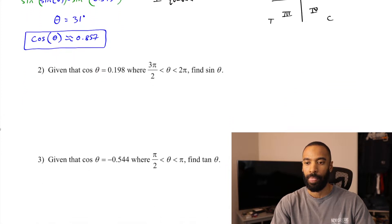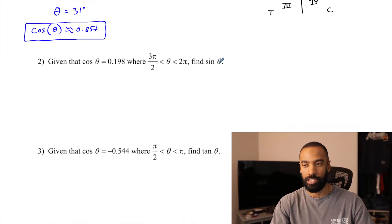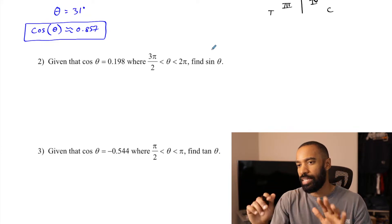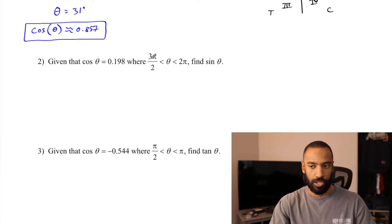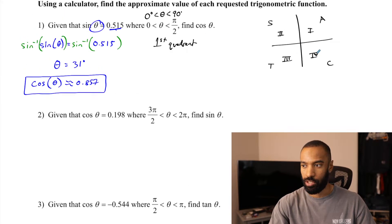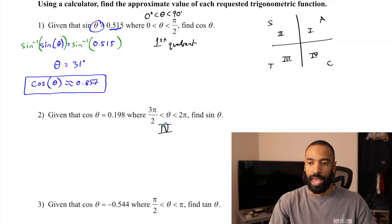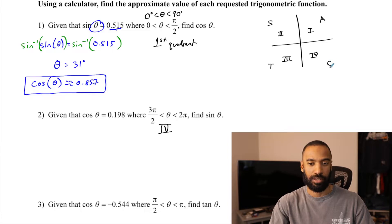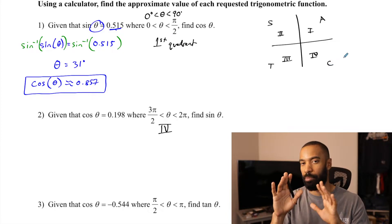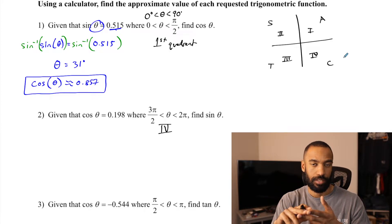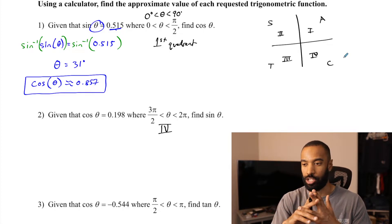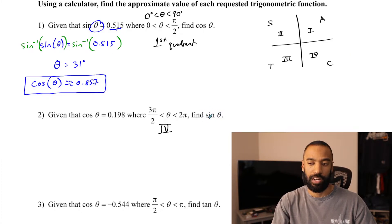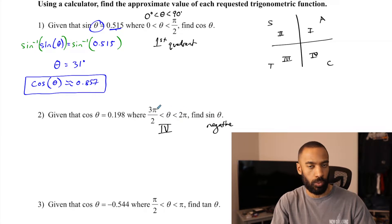Number 2: cosine of theta is 0.918 — wait, 0.198 — and we'll find sine of theta. The quadrant is from 3π/2 to 2π, which is 270 to 360 degrees — the fourth quadrant. Quadrant four only has positive cosine. If I take sine or tangent of that same angle of rotation, it'll actually be a negative value. So the one thing I know is that when I take the sine of my angle, the answer will be negative.